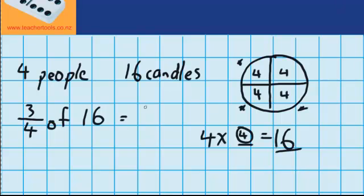But remember, my answer over here isn't going to be 4. Because I'm not interested in 1 quarter. I'm interested in 3 quarters. So if there's 4 in 1 quarter, then in 2 quarters there are 8. And in 3 quarters there are 12. So 3 quarters of 16 is 12.